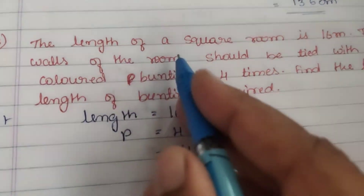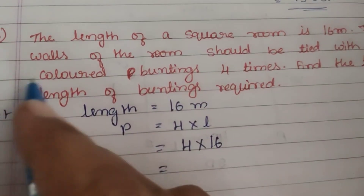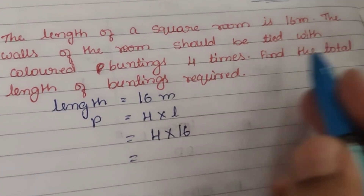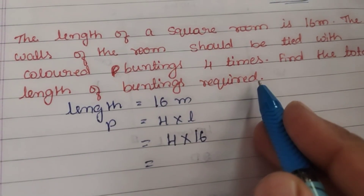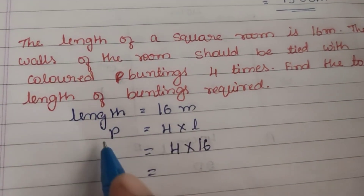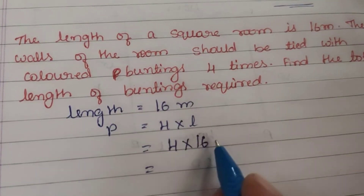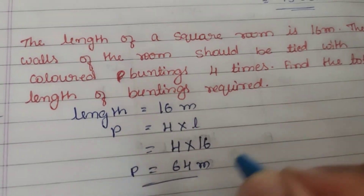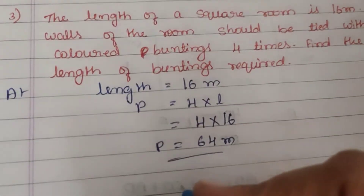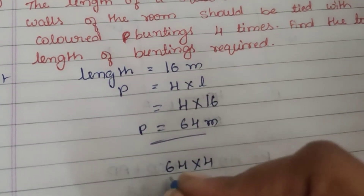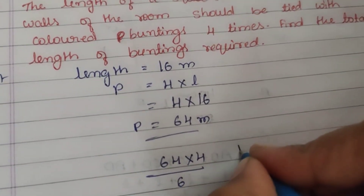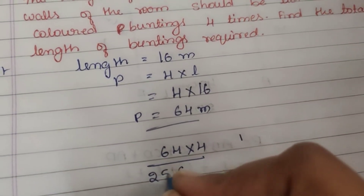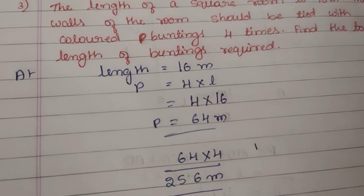Third question: the length of a square room is 16 meters. The walls of the room should be tied with colored buntings 4 times. Find the total length of the buntings required. Given: length is 16 meters. Perimeter is equal to 4 into 16, which equals 64 meters. But the buntings go 4 times, so total is 64 into 4. 4 fours are 16, carry 1, 6 fours are 24 plus 1 is 25, so 256 meters of buntings are required.